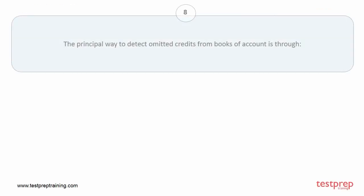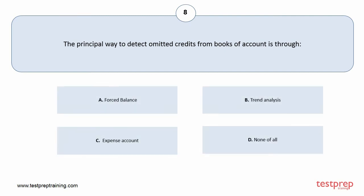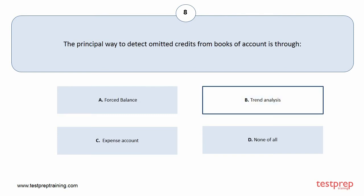Question number 8. The principal way to detect omitted credits from books of account is through. Your options are A. Forced balance, B. Trend analysis, C. Expense account, D. None of all. The correct answer is option B.